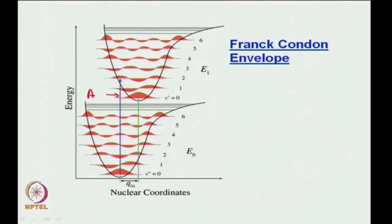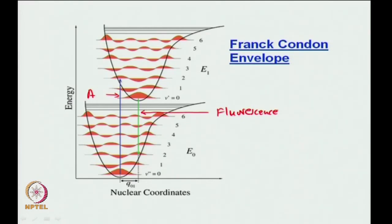If the green one is fluorescence — while going up you had 0-to-2 as the most intense, and while coming down you again have 0-to-2 as the most intense. You do not have to think about it; it is just evident from the picture because that is where you have the maximum overlap.